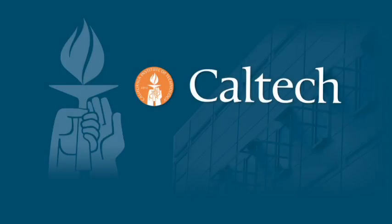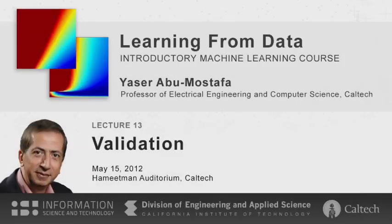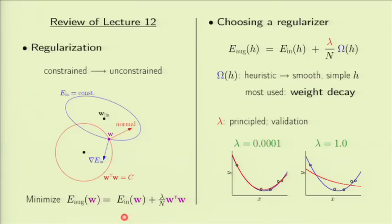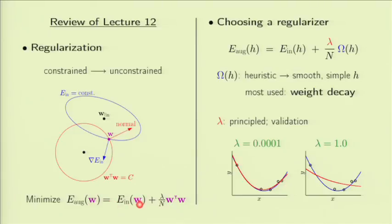The following program is brought to you by Caltech. Welcome back. Last time we talked about regularization, which is a very important technique in machine learning. The main analytic step was to take a constrained form of regularization where you explicitly forbid some hypotheses from being considered, thereby reducing the VC dimension, and converting it to an unconstrained version which creates an augmented error where no particular weight vector is prohibited, but you have a preference of weights based on a penalty.